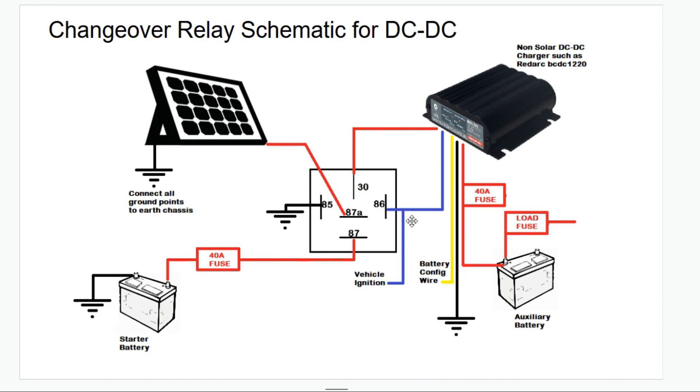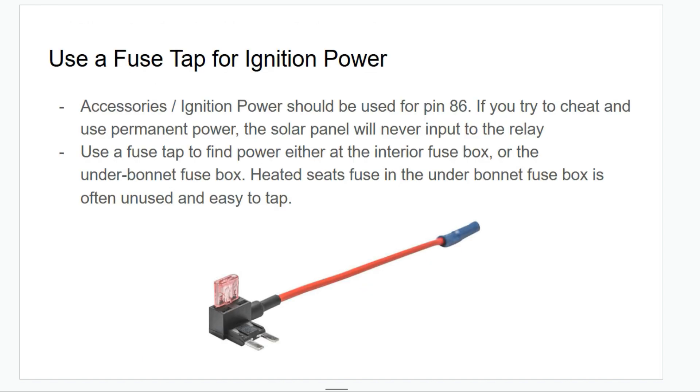The minute you turn the key off, the relay can sense that pin 86 has changed and the vehicle ignition is no longer running, and it will therefore switch to use pin 87A as the input and output it to pin 30. 87A comes from your solar panel. So that's good. If you turn the car off, your solar panel starts charging your second battery, and while the car's running you want the alternator to charge the second battery because it can provide more power and you can drive along and have the second battery charging at a faster rate.